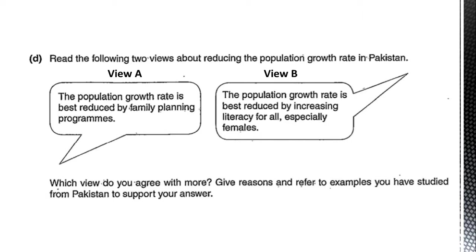This is a two-view statement question. In View A and View B, your first task is to understand the question and identify the keywords. View A states: 'The population growth rate is best reduced by family planning programs,' and View B states: 'The population growth rate is best reduced by increasing literacy for all, especially females.' The key phrase here is 'is best reduced.' So this question gives two possible ways to reduce the population growth rate in Pakistan — one is family planning programs, and the other is increasing literacy for all. This is the first step: understanding the question.